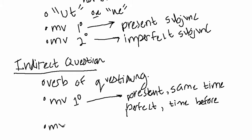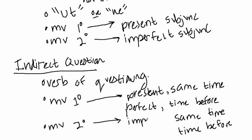So on the other hand, if your main verb is in secondary sequence, then you are going to, if it's same time or time before, then you are going to use your imperfect verb for the same time.